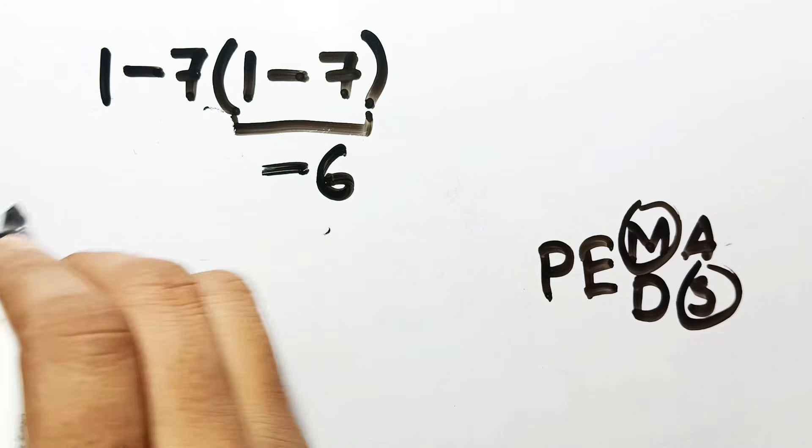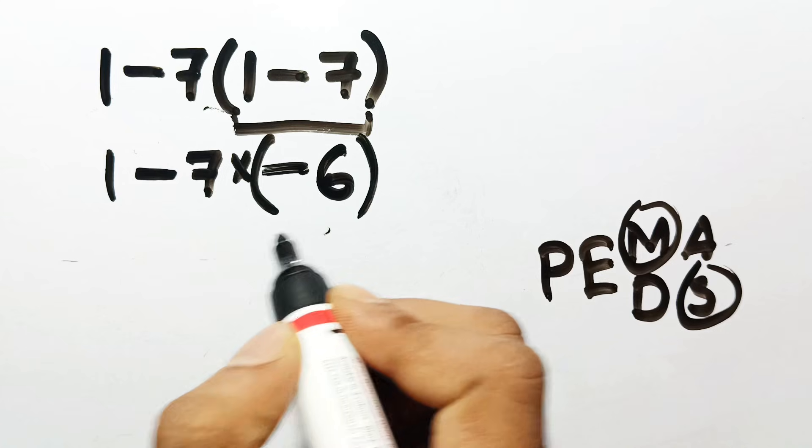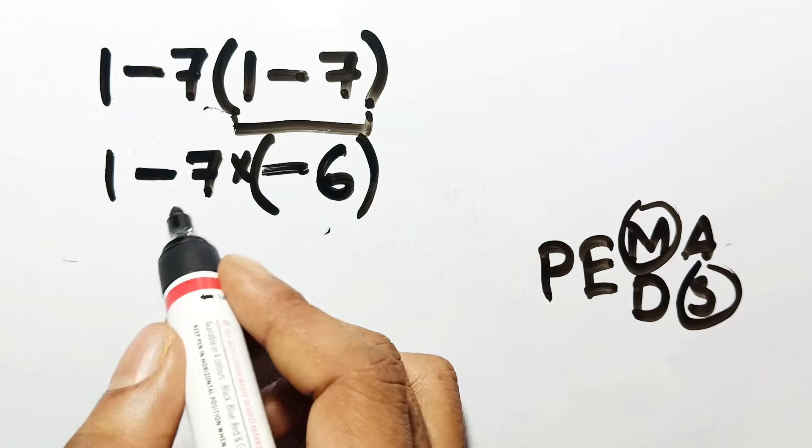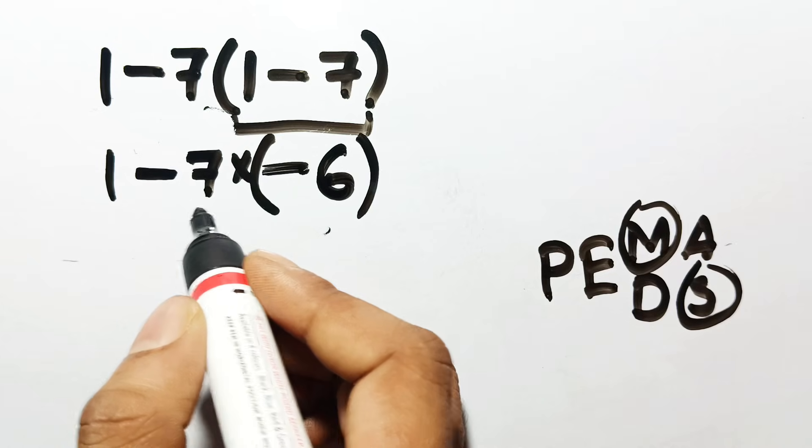Now the expression looks like this: 1 minus 7 times negative 6. Many people make the mistake of subtracting 1 minus 7 right now. If we do this subtraction before the multiplication, it is wrong.